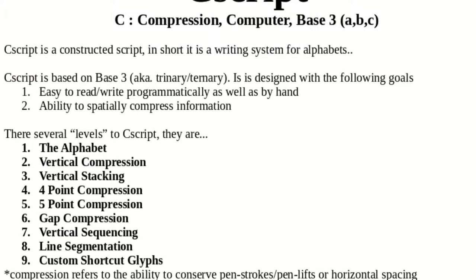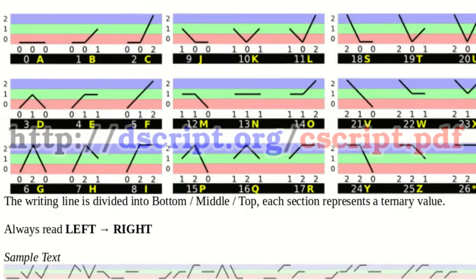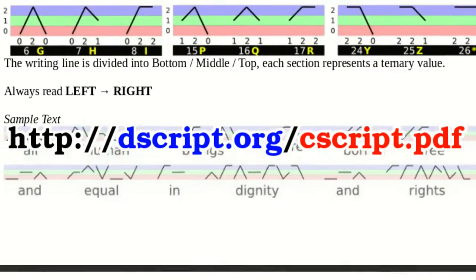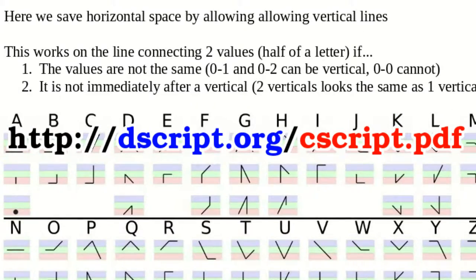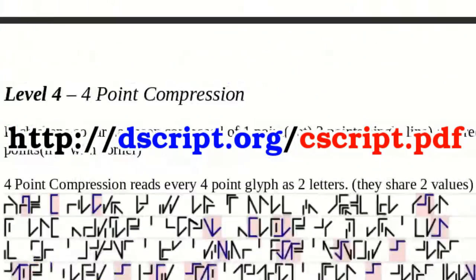Cscript is a computer-human bi-friendly writing system. That is to say, it's a writing system designed to be both easy to read and write by humans as well as programmatically by computers. It has very strict and rigid rules laid out in its documentation, while at the same time also having some compression and flexibility methods that can make it fun and artistic to use.